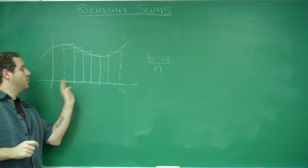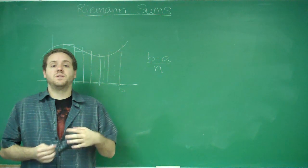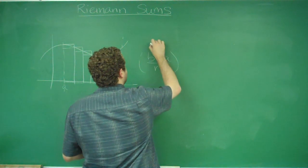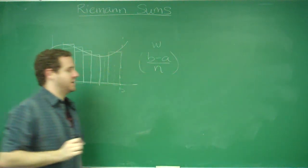So the length of your interval divided by how many rectangles would give you the width of every rectangle. And keep in mind, in Riemann sums, you're always working with all the rectangles have the same width.